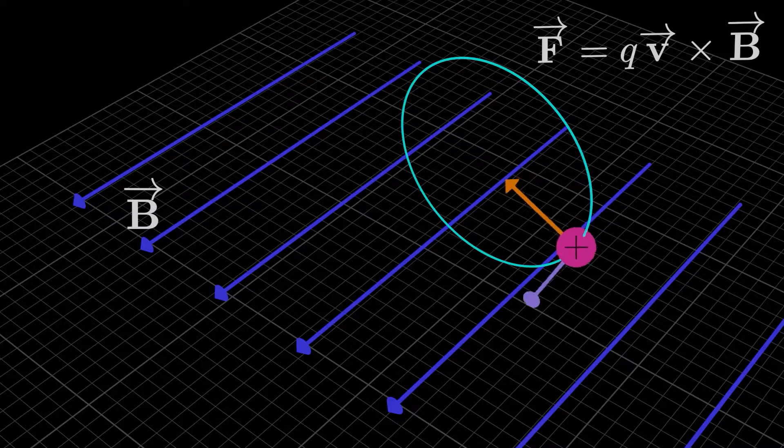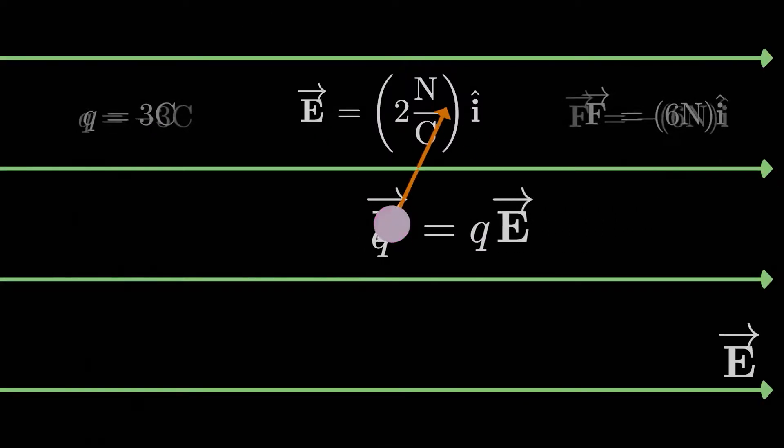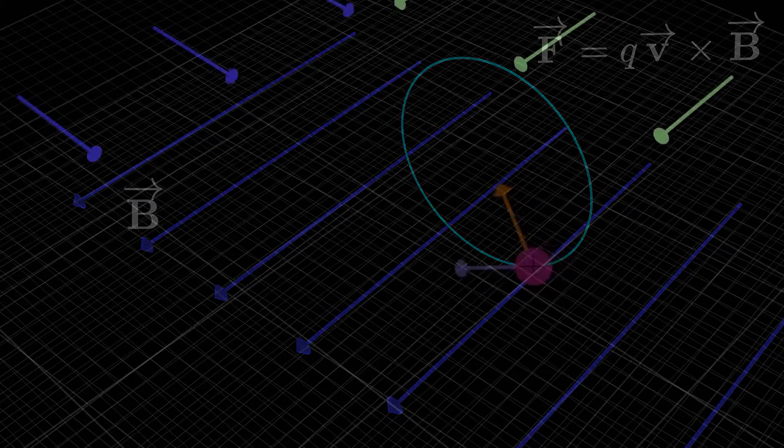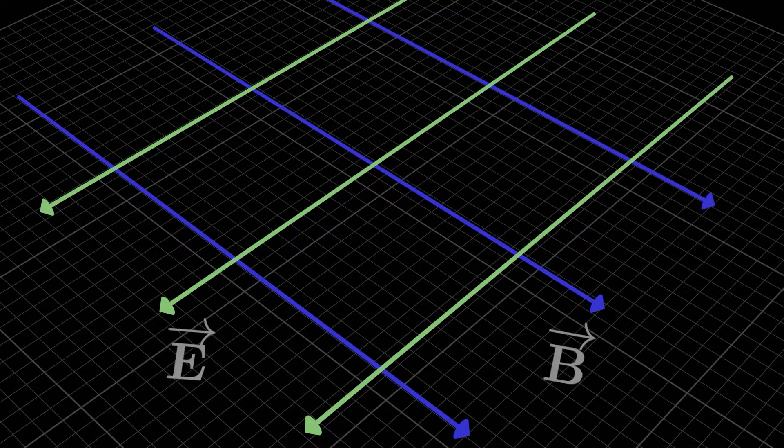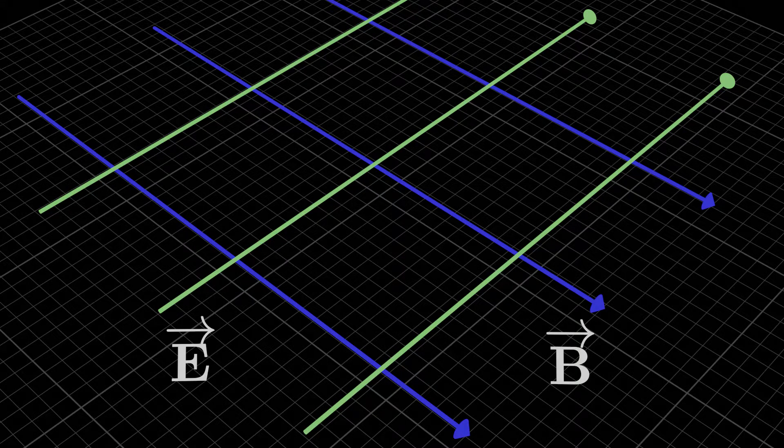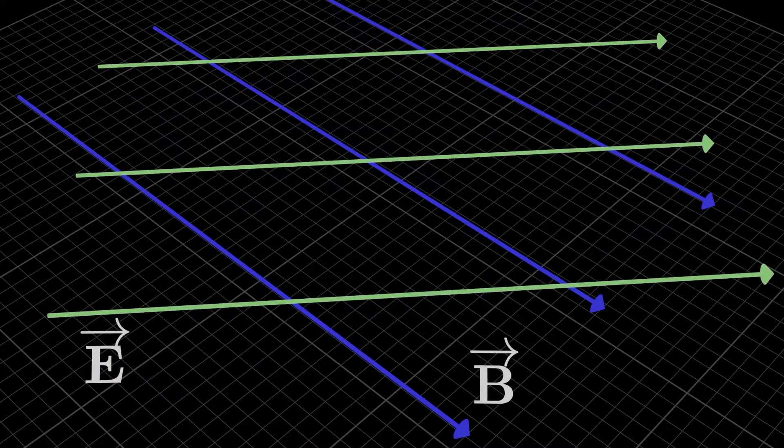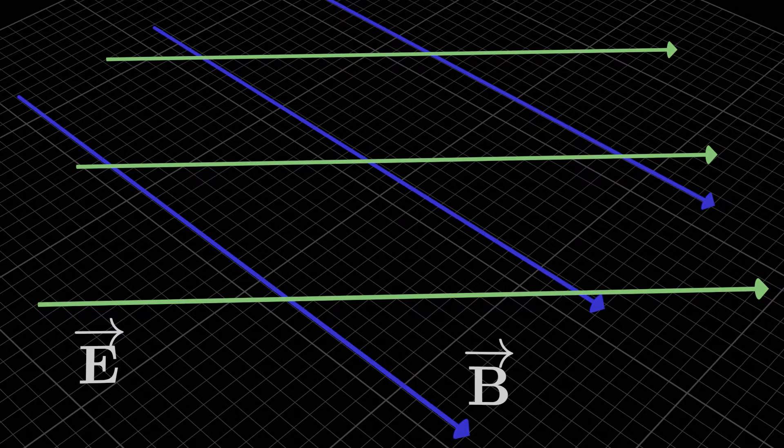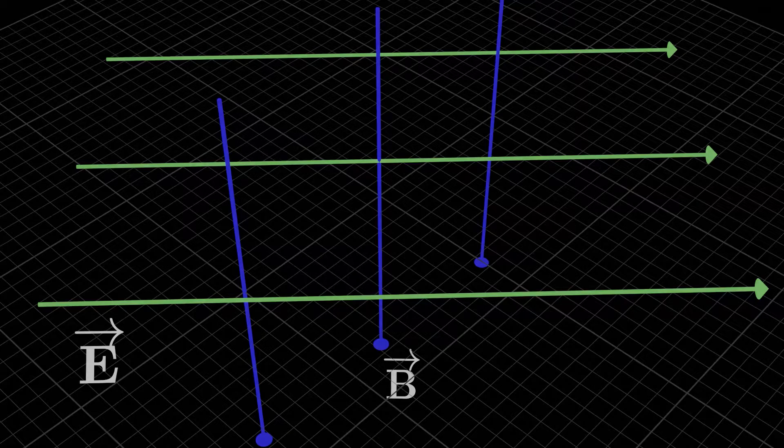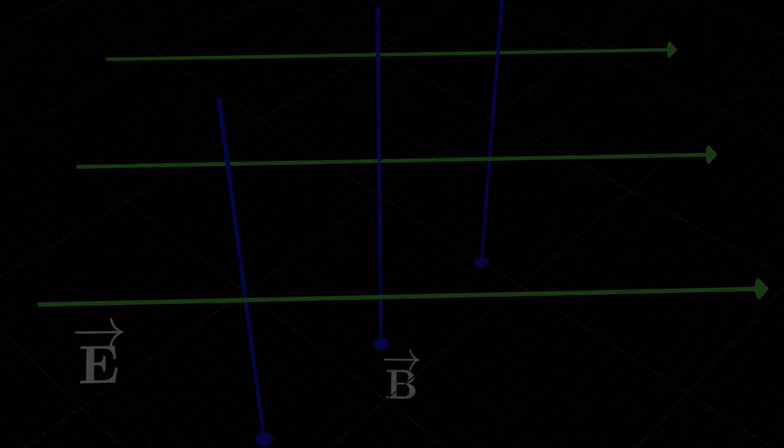So up until now we've dealt with the electric field on its own and the magnetic field on its own, but what if we had both at the same time? Is it even possible to have both? Well, sure it is. Having a uniform electric field and a uniform magnetic field act in the same region at the same time is a pretty easy thing to accomplish in practice. I mean, why shouldn't we be allowed to have both? So with that established, let's come back to it later.